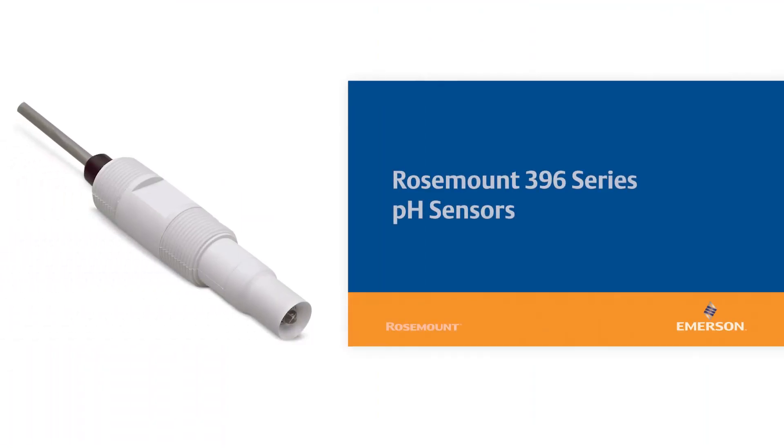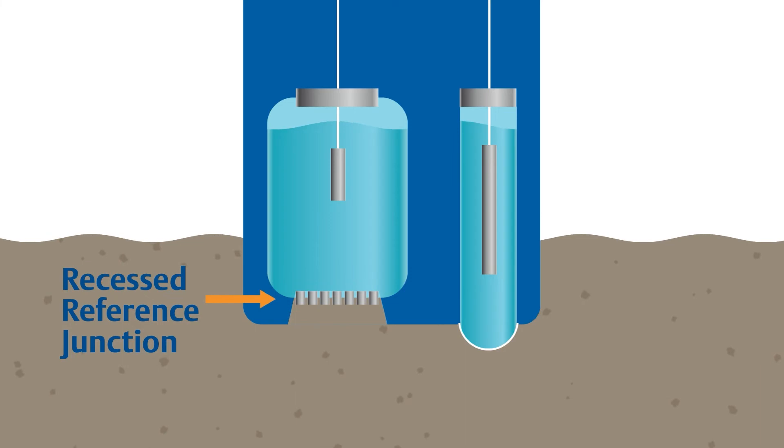Rosemount 396 series pH sensors are designed to overcome these challenges. These sensors feature a recessed reference junction with larger surface area to minimize the effects of coating and ensure uninterrupted ion flow even in dirty water applications.